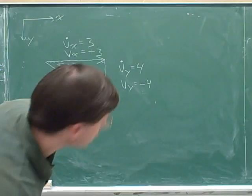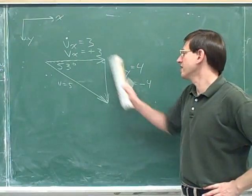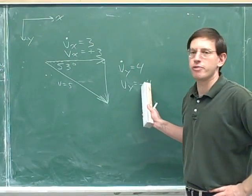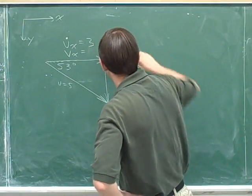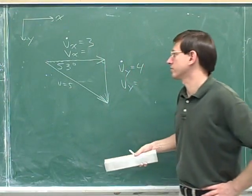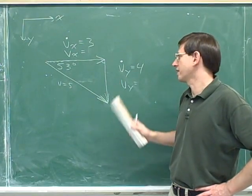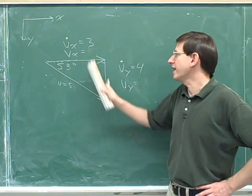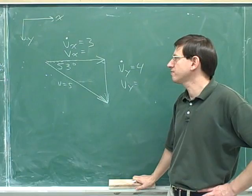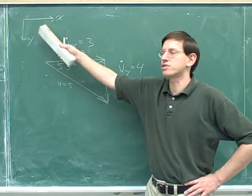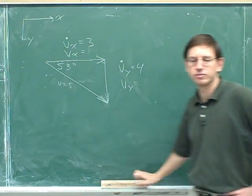Since we just changed our positive directions, our previous signed numbers are probably not right anymore, so we better erase those. The magnitudes are still correct — this side still has a length of three and this side still has a length of four — but now the signed components could be different. Please pause the video and, using these new positive directions, try to write down the new signed components.